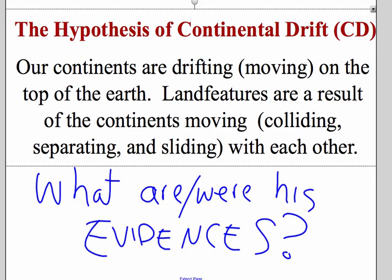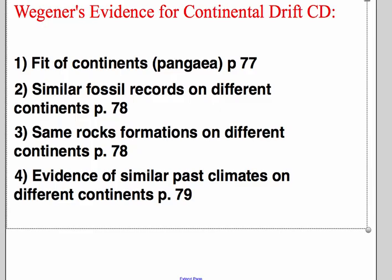So what were his lines of evidence? He had four things he was able to use to help support his theory. First was the fit of the continents — Pangaea, the huge continent when they were all together, seen on page 77. The continents actually fit together like puzzle pieces; if you look at Africa and South America, that's what they're talking about. Second, similar fossil records on different continents — the same species recorded in rock, although now there's a giant ocean between them. Third, same rock formations on different continents — identical rocks separated by an ocean that were once connected. And fourth, evidence of similar past climates on different continents.